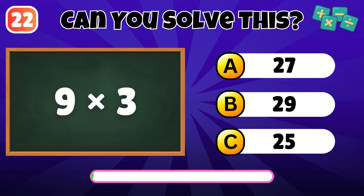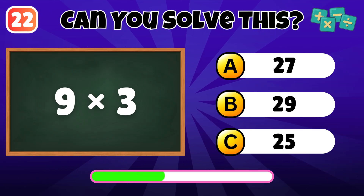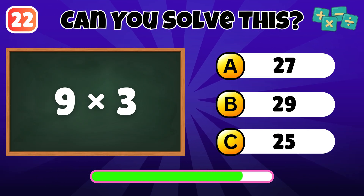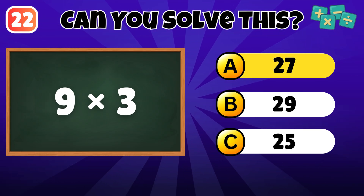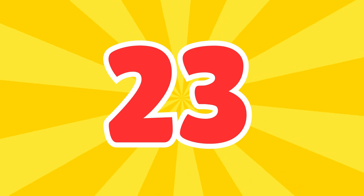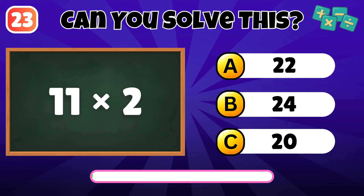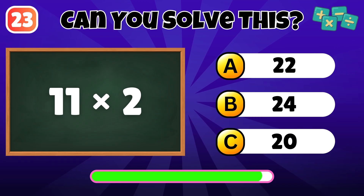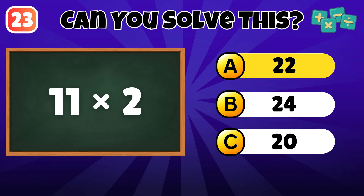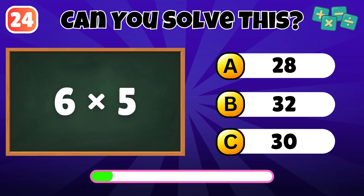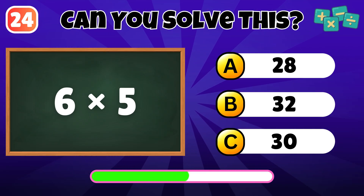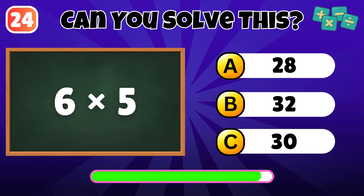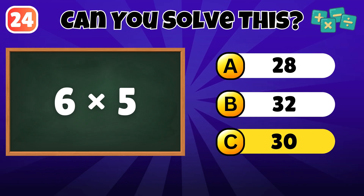What is 9 times 3? The answer is 27. What is 11 times 2? The answer is 22. What is 6 times 5? The answer is 30. What is 8 times 6?